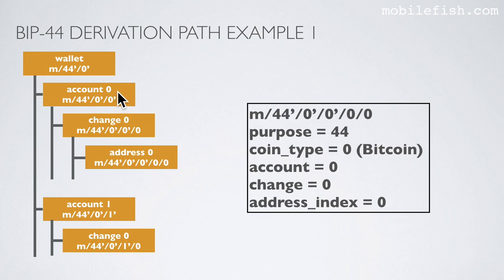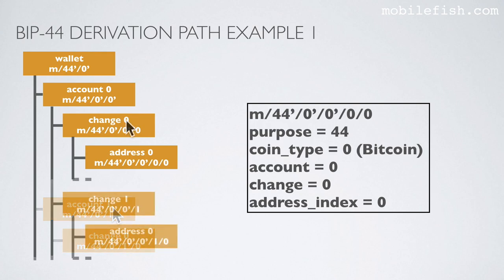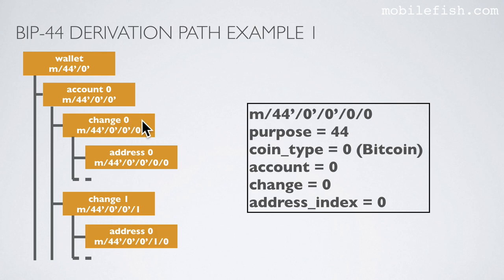Account 0 can represent our payment accounts and account 1 can represent our savings accounts. This is change level 0 and this is change level 1. Suppose you have 10 bitcoins and you want to transfer 4 bitcoins to another address and 6 bitcoins you want to receive as change. These addresses, for example, can be used as our change addresses.